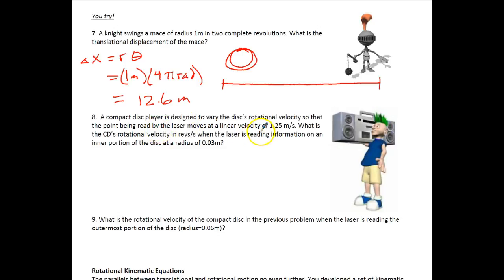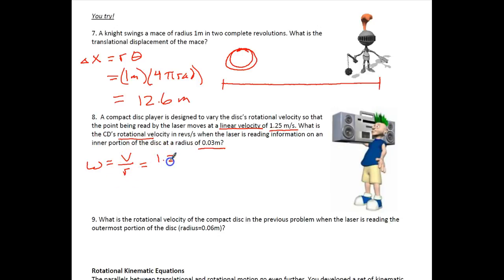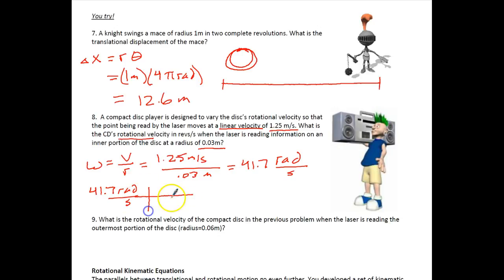A compact disc player varies rotational velocity so a point read by the laser moves at 1.25 meters per second linearly. What is the rotational velocity in revolutions per second when the laser reads the inner portion at 0.03 meters? Angular velocity = linear velocity / radius = 1.25 / 0.03 = 41.7 radians per second. Converting: 41.7 × (1 revolution / 2π radians) ≈ 6.63 revolutions per second.